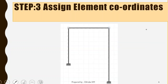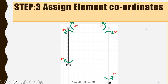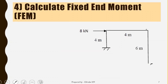Moving to the third step, that is to assign element coordinates. We know every member of the frame structure will have six element coordinates: one star, two star, three star, four star, five star, and six star. So we have a total of six element coordinates per member.